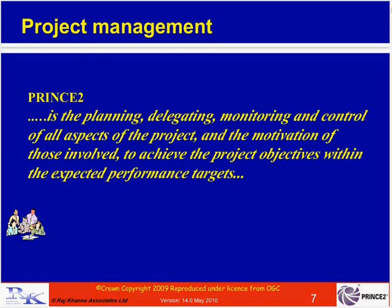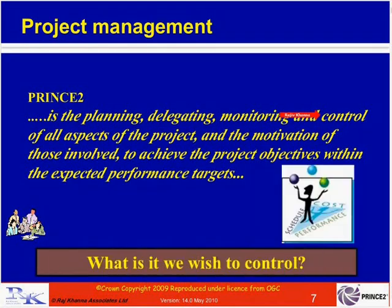According to PRINCE2, whenever we manage a project we need to plan what we are going to do, delegate the work to different people to produce, and while the work is being done, monitor progress and ensure everything is within our control parameters. The elements of the project we wish to control are: time, cost, scope, benefit, risks, and quality. Scope is what is included and what is excluded. Putting mechanisms in place to control these six elements will increase our chances of success.